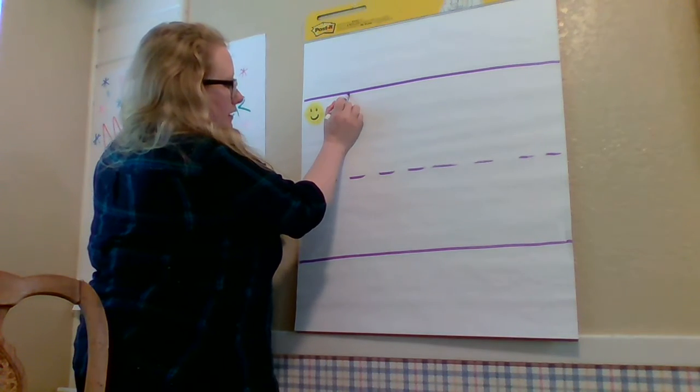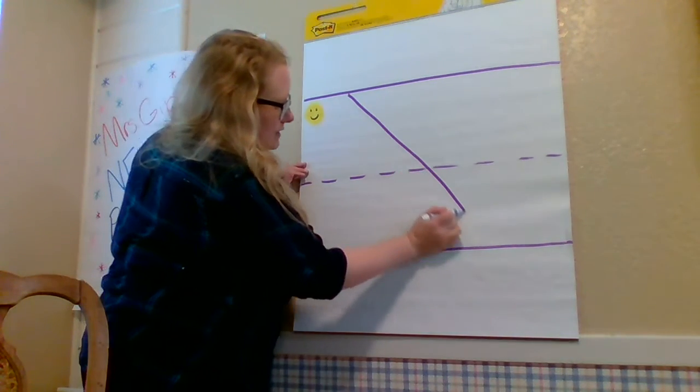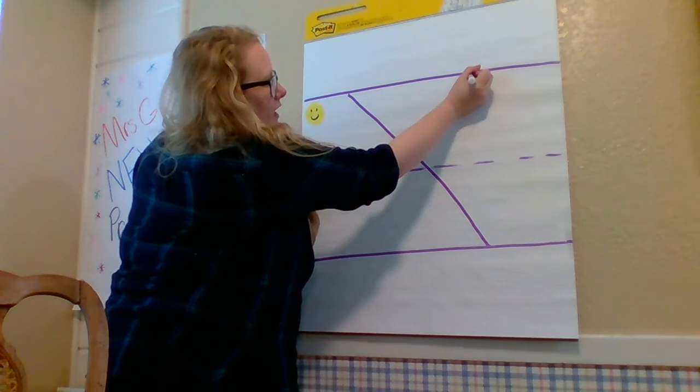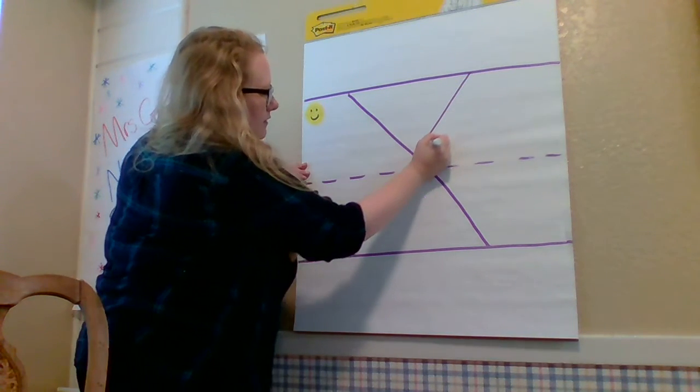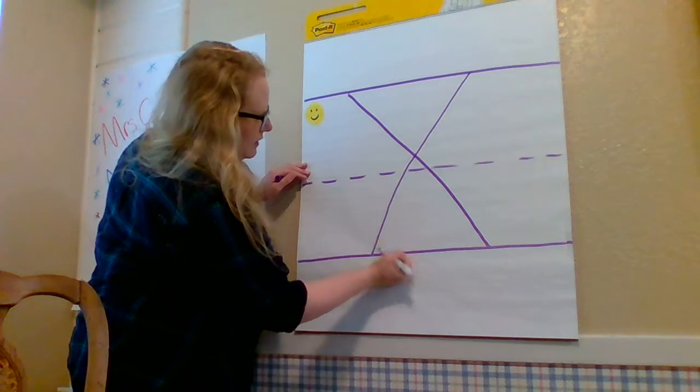So I'm going to start at the top here and make a diagonal line down, and then I'm going to come back up to the top and then make another long diagonal line down.